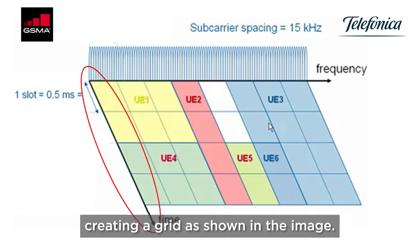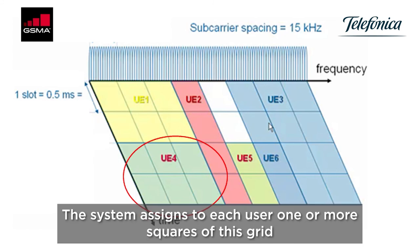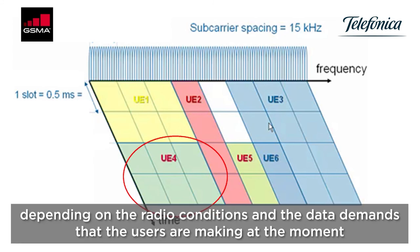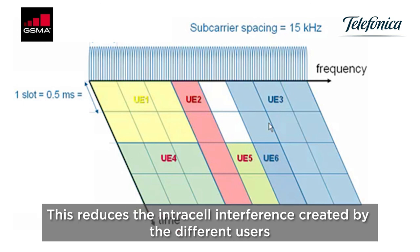This creates a grid as shown in the image. The system assigns to each user one or more squares of this grid depending on the radio conditions and the data demand that the users are making at the moment.